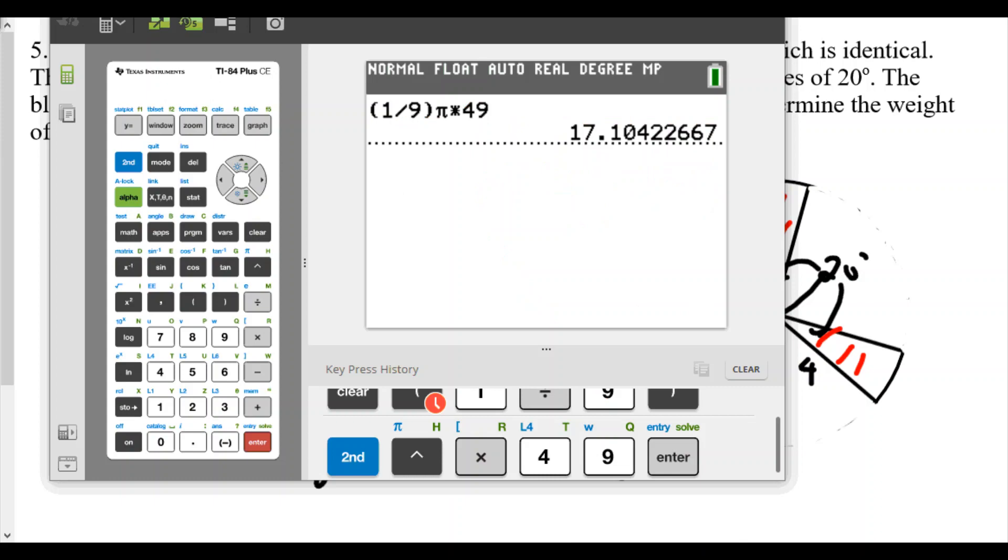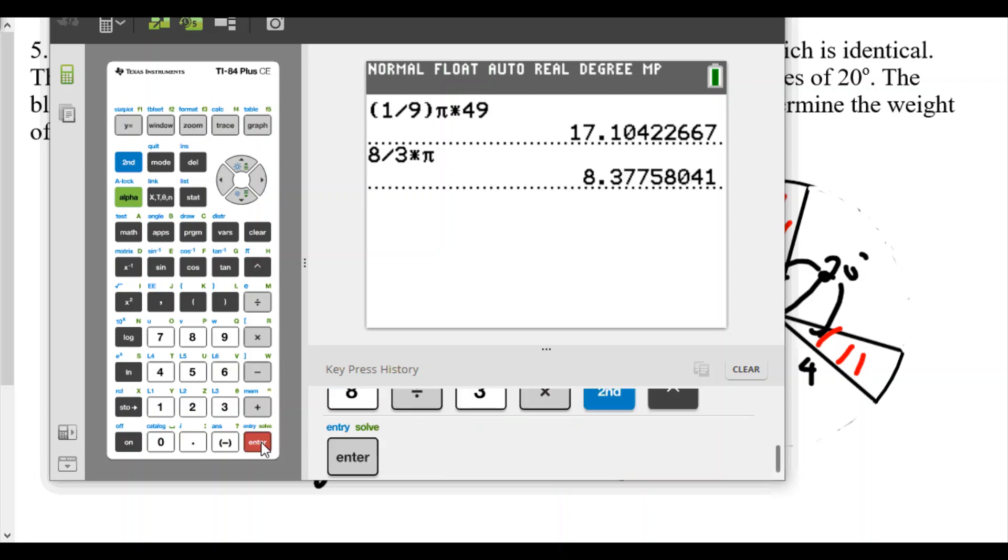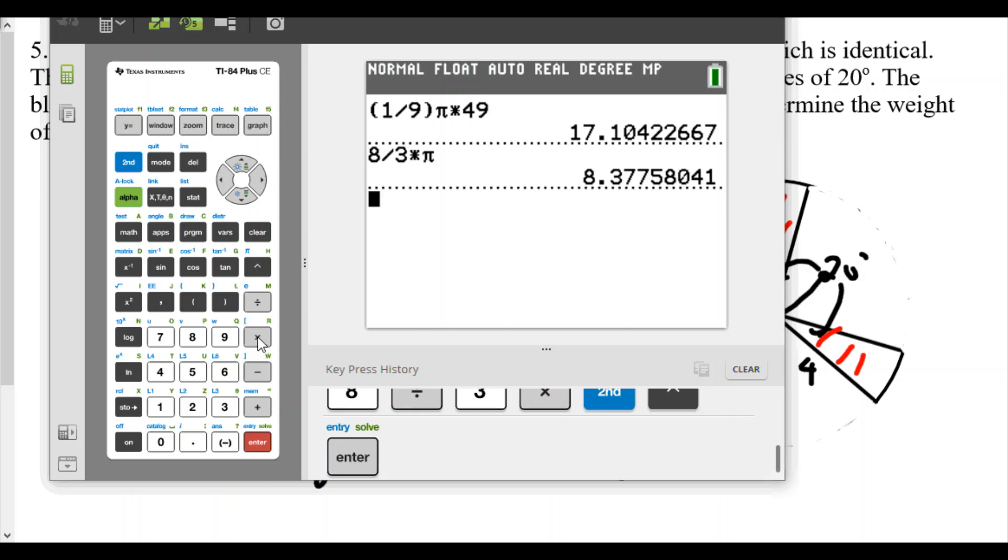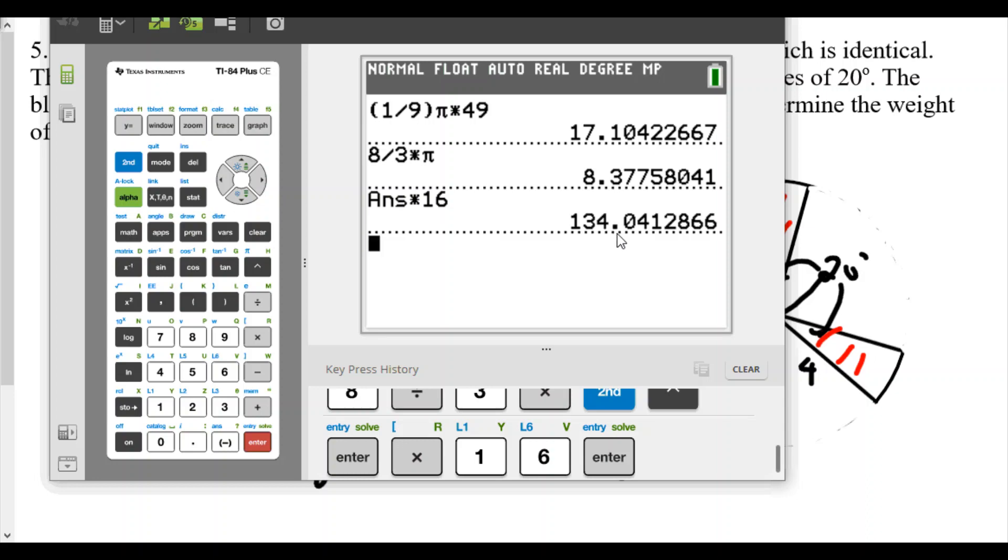So we'll break out our calculator. We're going to go 8 divided by 3, so 8 divided by 3 times π. And so the total area will be in this case 8.377... square inches. But then it's 16 grams per square inch. So now we're going to multiply that by 16. So I take our answer, going to hit multiply by 16. And so now our weight is going to be 134.